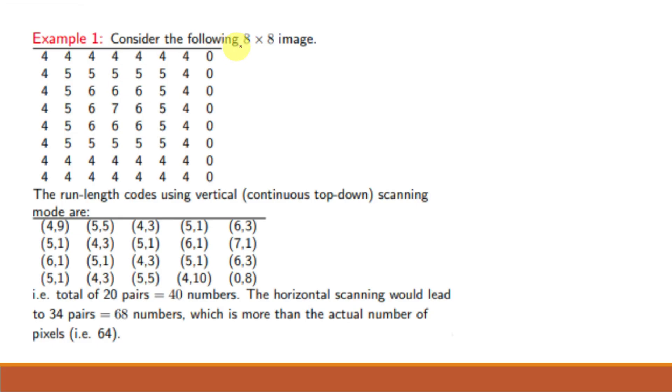For example consider this example, it is an 8x8 image. So the run length codes using vertical or continuous top-down scanning modes are like this. Then again going back. So 4 is occurring 9 times, then 5 is occurring 5 times, again 4 is occurring 3 times and so on. So you can see that there are total 20 pairs. So 20 pairs that means total 40 numbers. So for this vertical scanning, the compression ratio is, this is an 8x8 image. That means 64 upon 40.